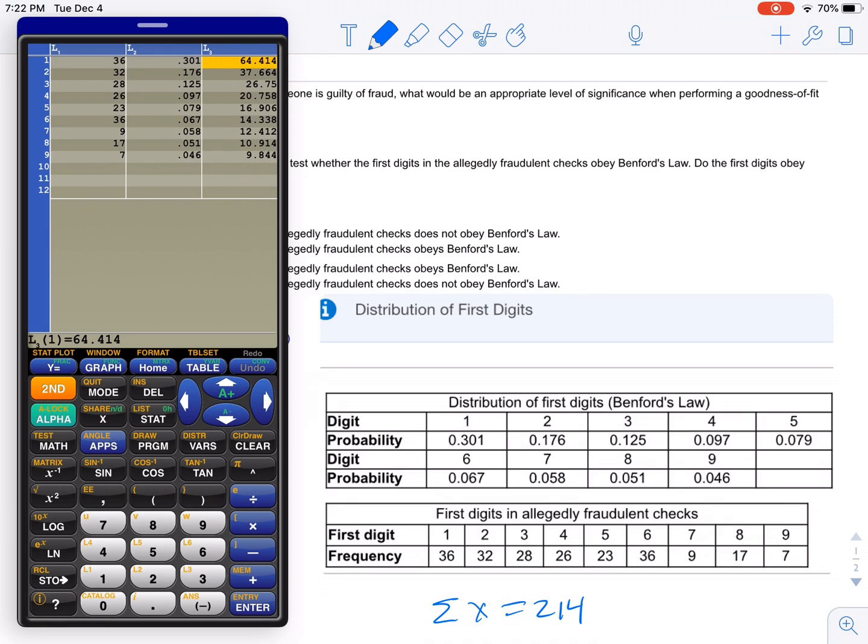We get those by Benford's Law. So in L2, notice that I put the percentages according to Benford's Law. If I multiply that times 214, I'll do it for you. I go 214 times L2...